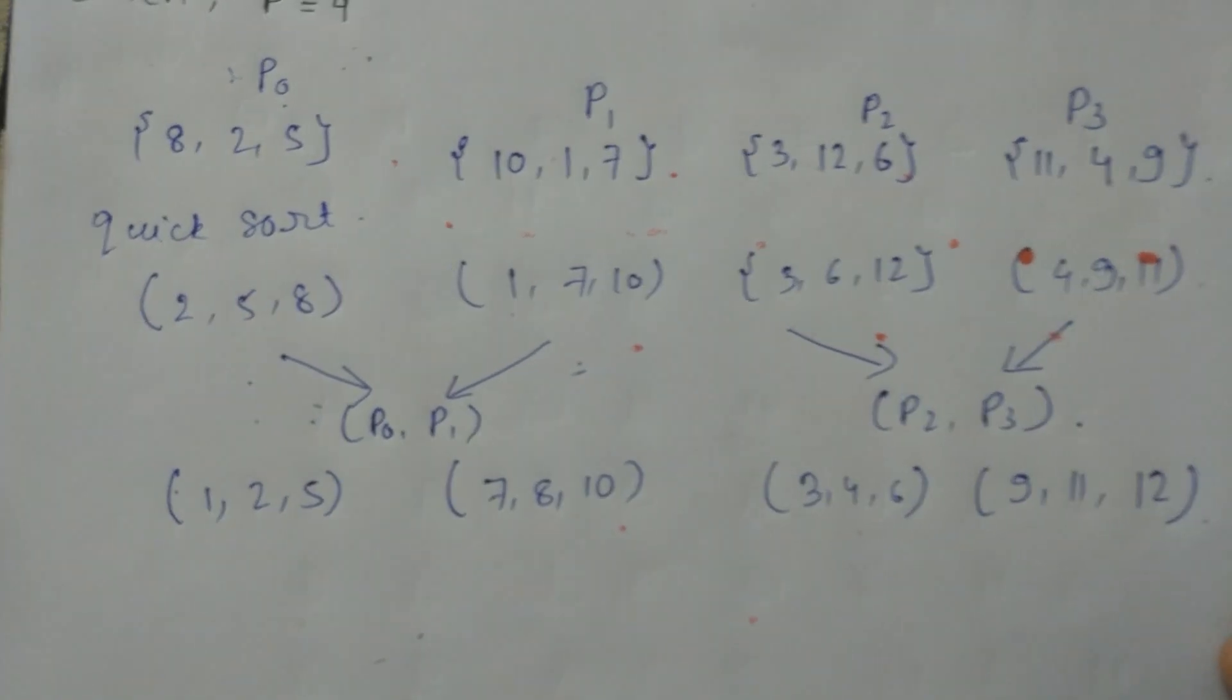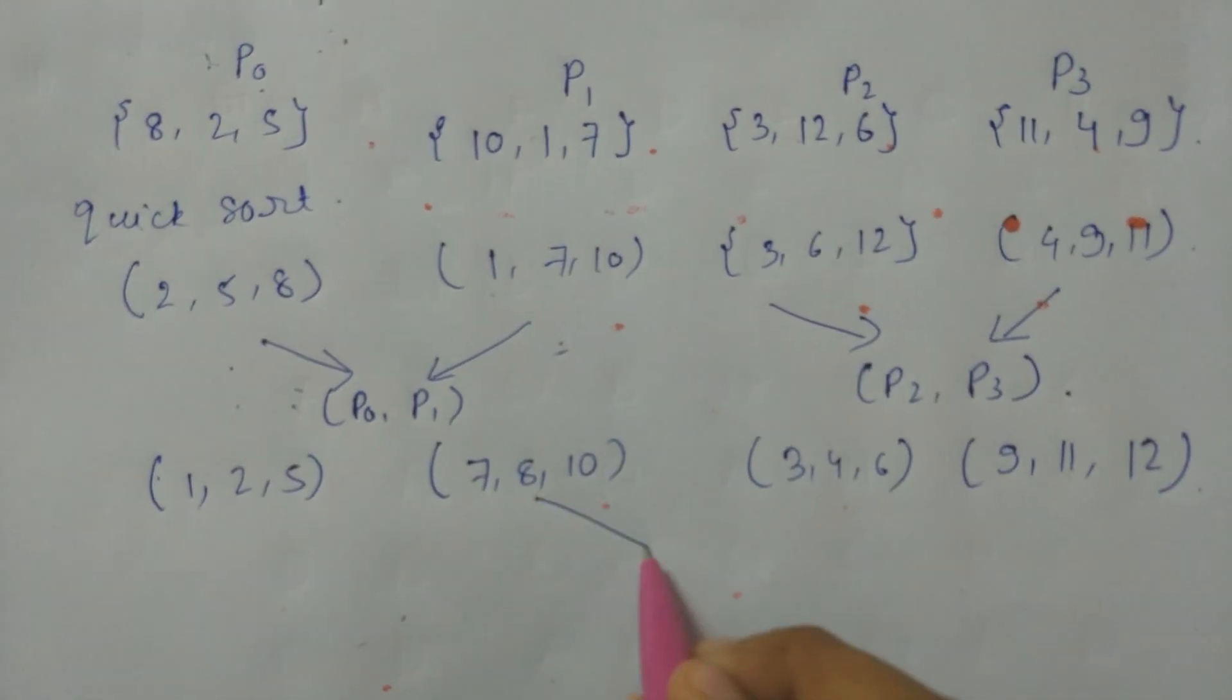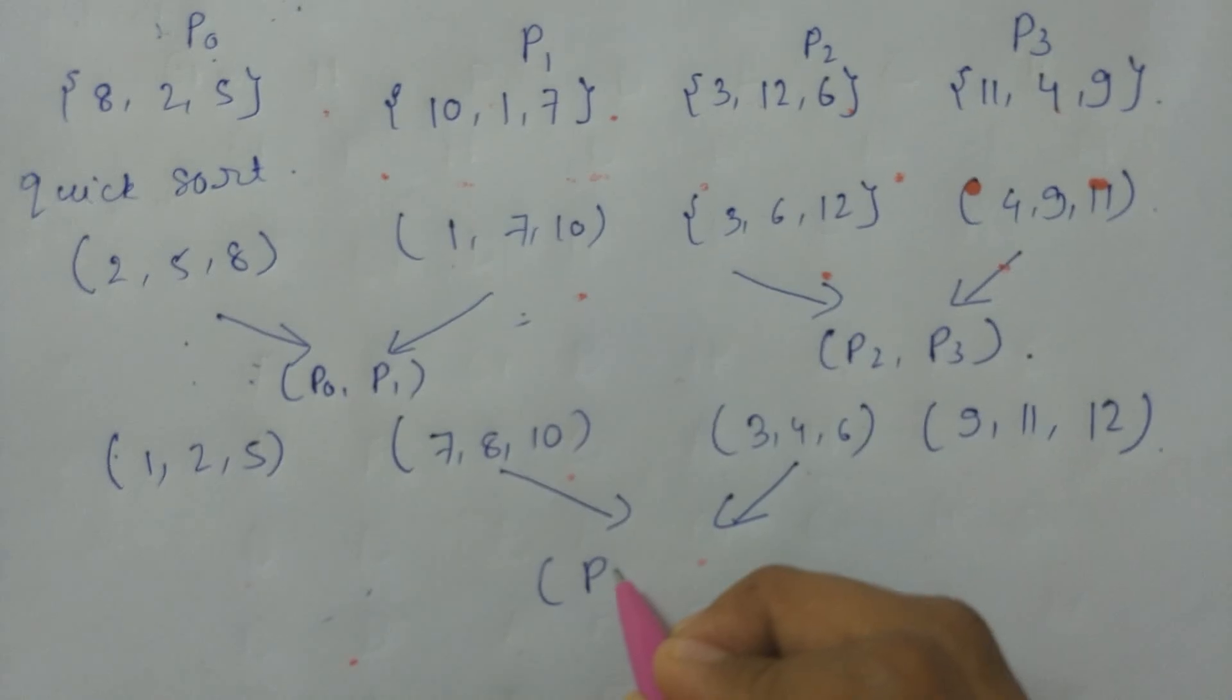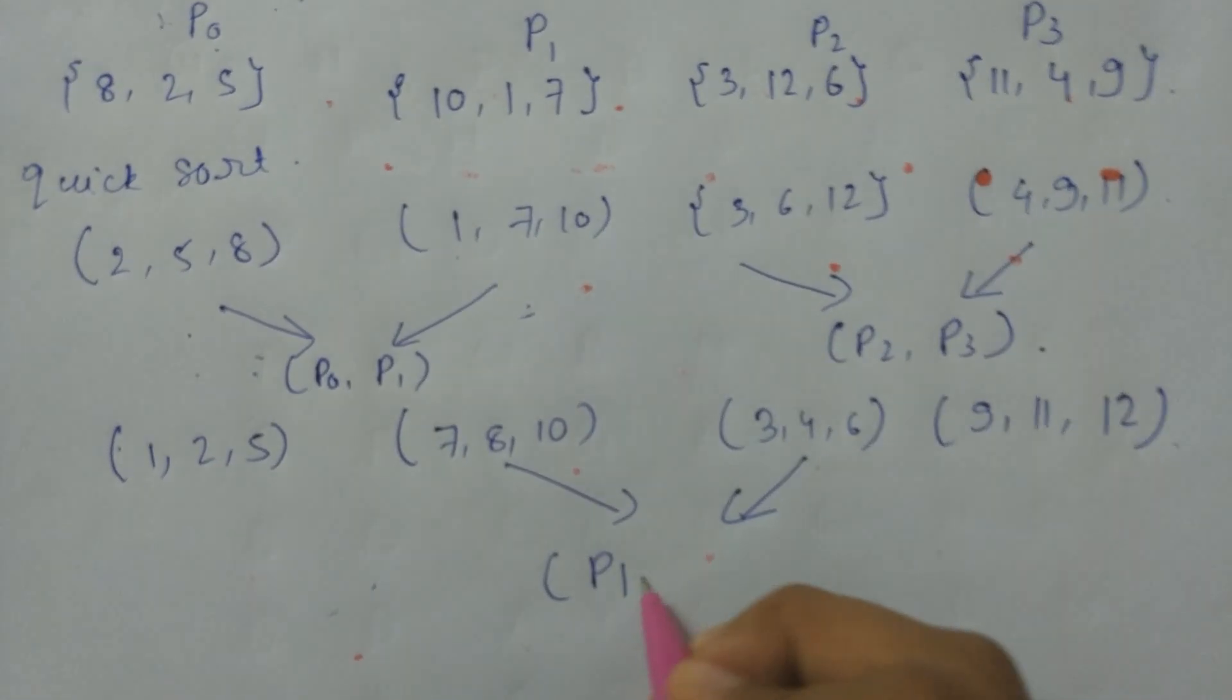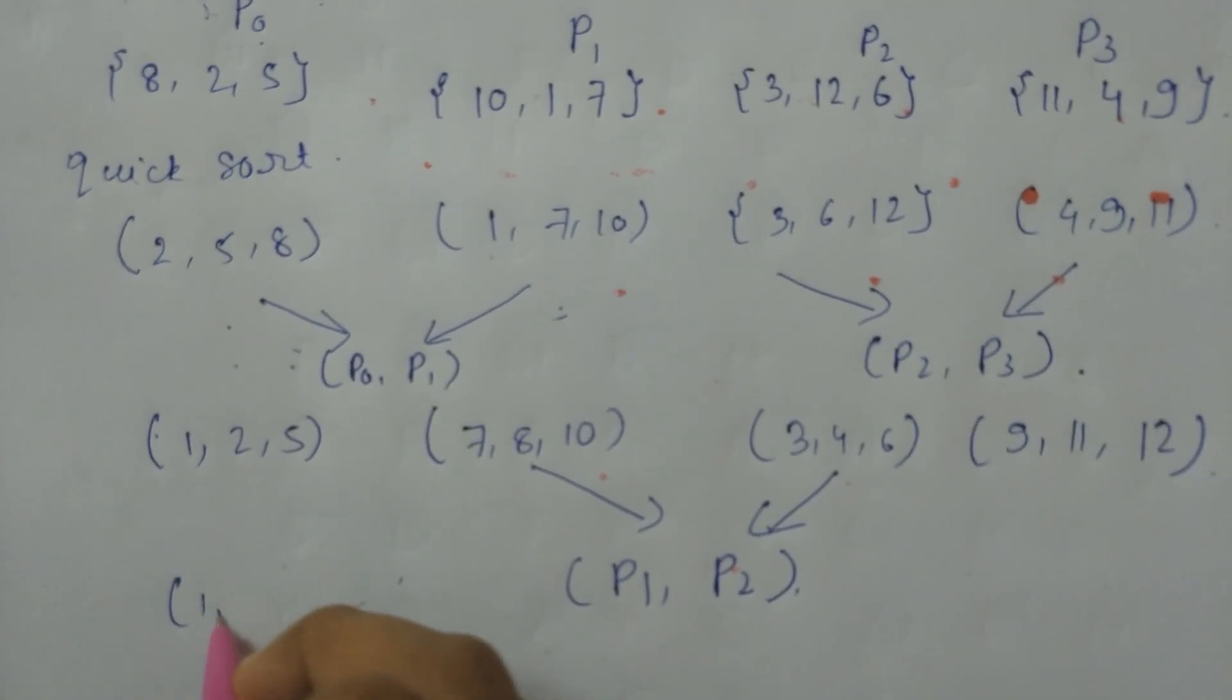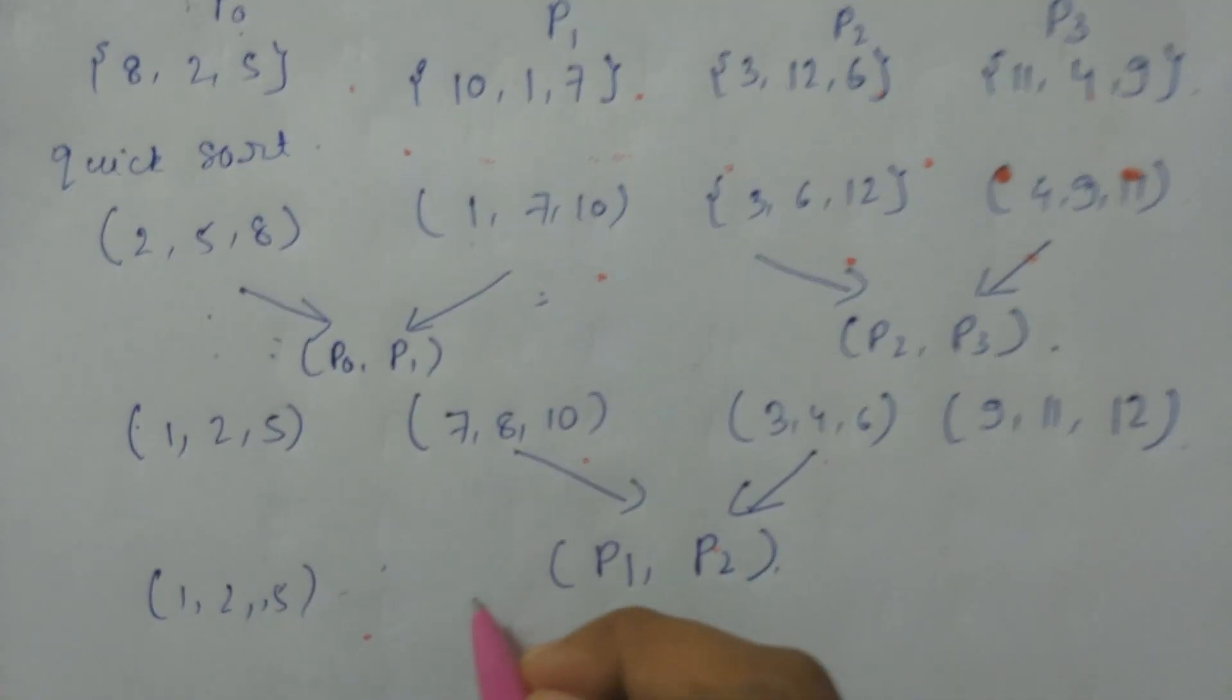Now we will merge 7, 8, 10 and 3, 4, 6 - that is P1 and P2. So we will get 1, 2, 5 which is same, and here 3, 4, 6, 7, 8, 10.